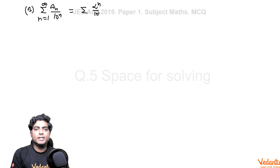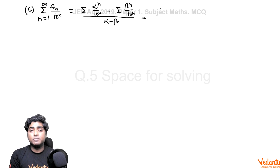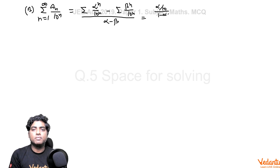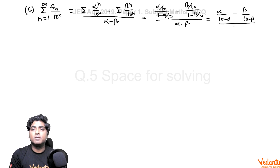This becomes [Σ (α/10)^n - Σ (β/10)^n] / (α - β), both sums from 1 to infinity. Using the infinite GP formula — first term over (1 minus common ratio) — I get (α/10)/(1 - α/10) minus (β/10)/(1 - β/10), divided by (α - β). Simplifying, this is α/(10 - α) minus β/(10 - β), all divided by (α - β).